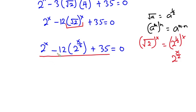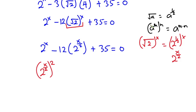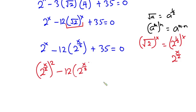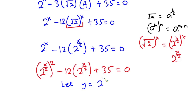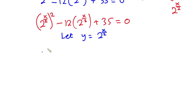We ended up with this equation and it is not yet quadratic. But notice that 2 to the power x can be written as 2 to the power x/2, raised to the second power. Applying that rule, we still get 2 to the power x — so we are on point. This gives us 2 to the power x/2, squared, minus 12 times 2 to the power x/2, plus 35, equals 0 — a quadratic equation! Now let y equal 2 to the power x/2, so the equation becomes y squared minus 12y plus 35 equals 0.